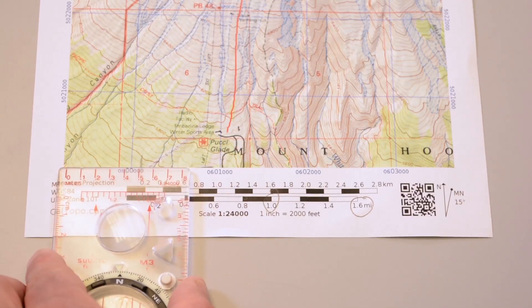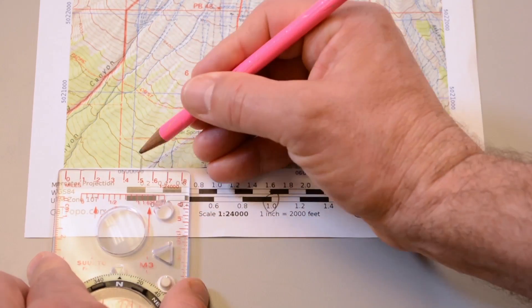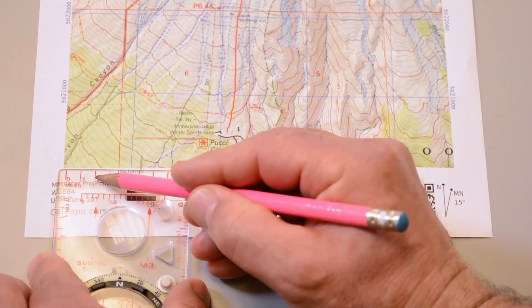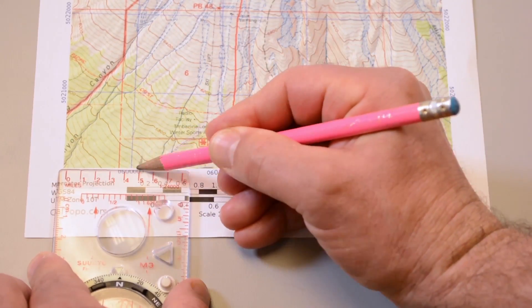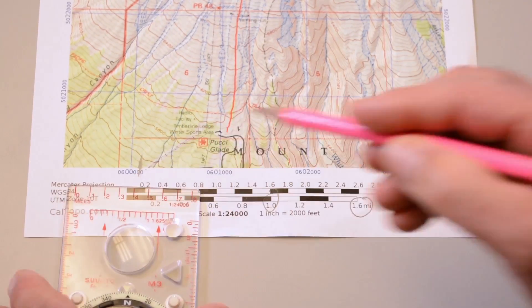For example, measuring from the corner of our map over to this point is exactly a half mile: 1 tenth, 2 tenths, 3, 4, 5 tenths of a mile, from this corner to this spot.